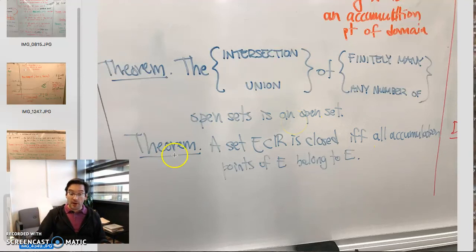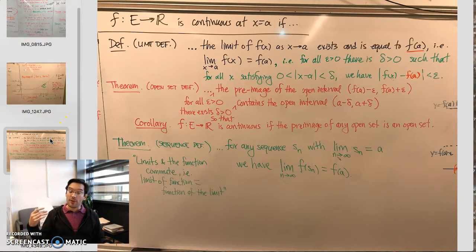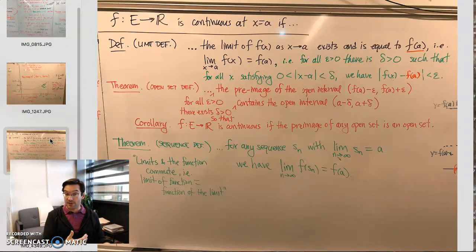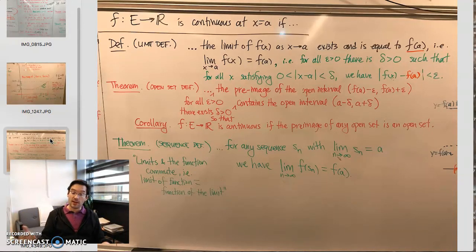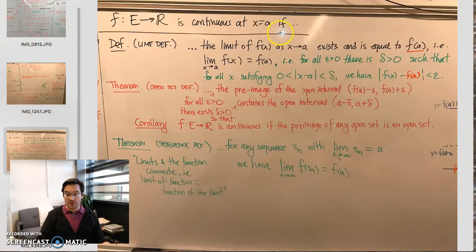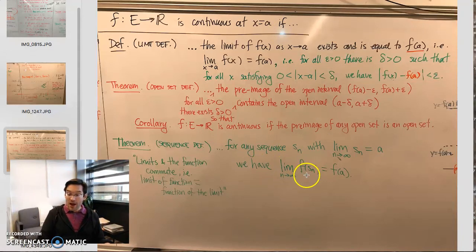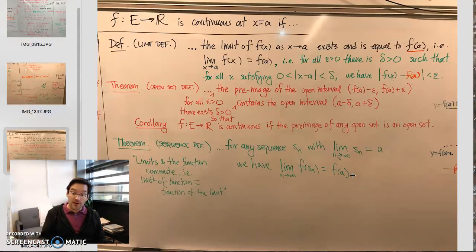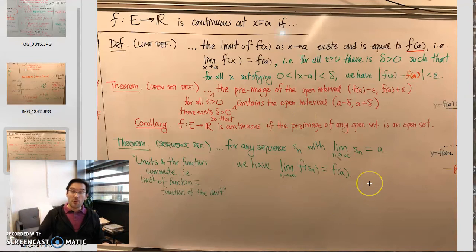These are the ideas we'll explore over the next couple of classes as we round out the semester. We'll examine how the limit definition of continuity is satisfied or not by various examples, and likewise for the open set definition. Last but not least, we'll look at the sequence definition of continuity: a function is continuous at x equals A if any sequence of x values converging to A will have its corresponding y values also converge to f of A. These are our three faces of continuity: the limit definition, the open set definition, and the sequence definition.